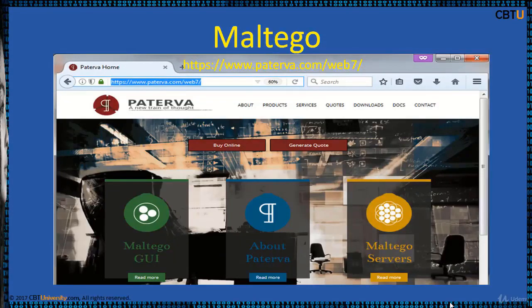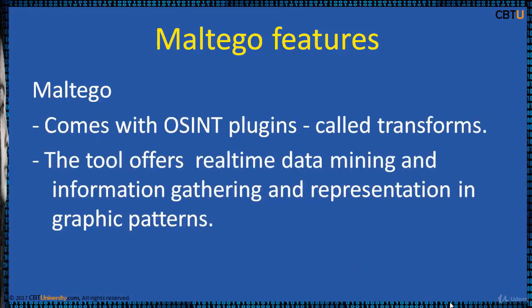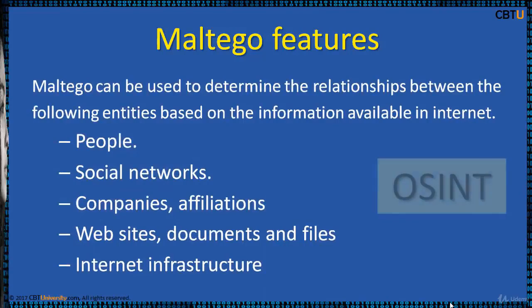We are going to explore the Paterva website about Maltego. Maltego comes with open source intelligence OSINT plugins called Transforms. The tool offers real-time data mining and information gathering and representation in graphic patterns. Maltego can be used for the information gathering phase of footprinting. Maltego does footprinting of internet infrastructure as well as gathering information about people and organizations, analyzing the relations based on the information available on the internet.